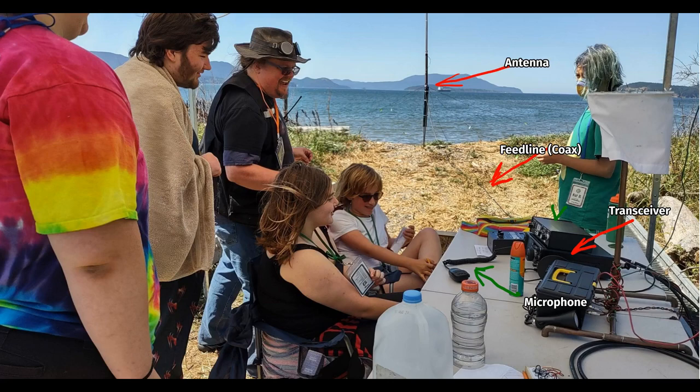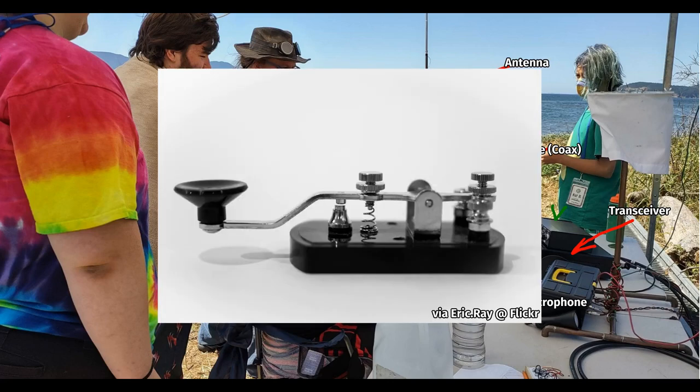If we were operating in Morse code, we'd need a key. One common type is the straight key, which is what people think of when doing Morse. For a dit, press down for a short moment. For a da, press down for a longer one.